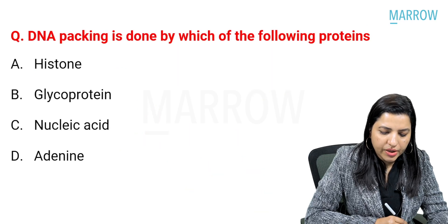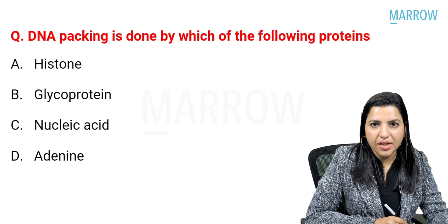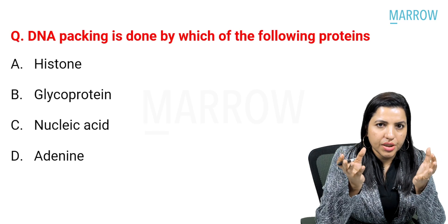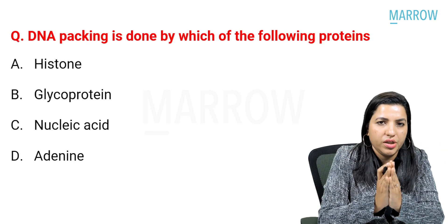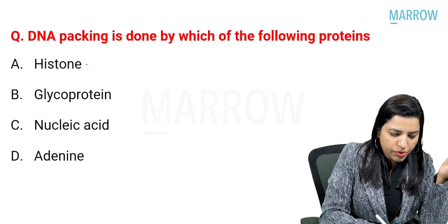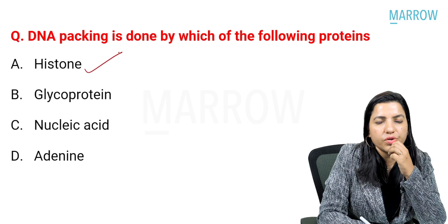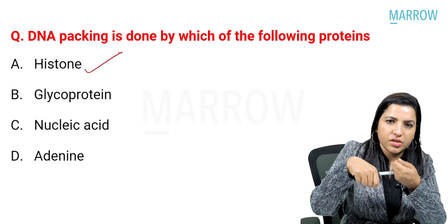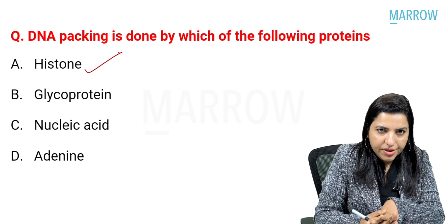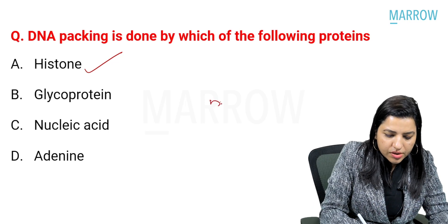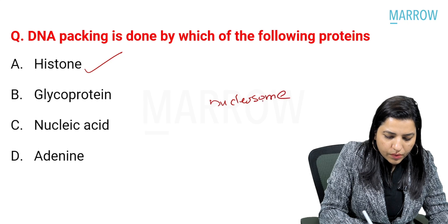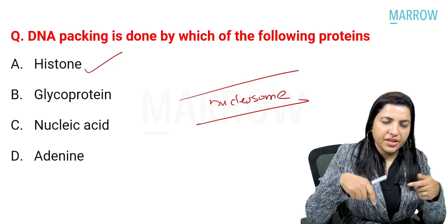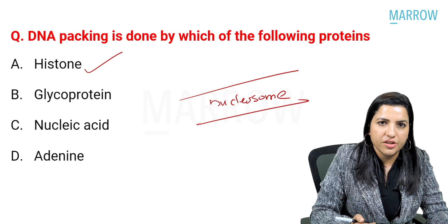DNA packing is done by which of the following proteins? DNA is negatively charged, so it can be packed by a positively charged protein — which is histone proteins. The histone proteins form a histone octamer on which the double-stranded DNA is wound in a left-handed direction. This is called a nucleosome. The nucleosome is the first level of organization, then the second level, and finally it forms a metaphase chromosome. It is not glycoprotein, nucleic acid, or adenine.